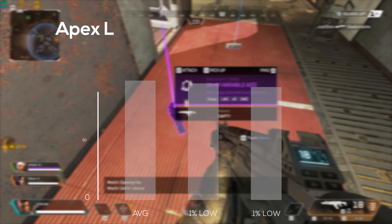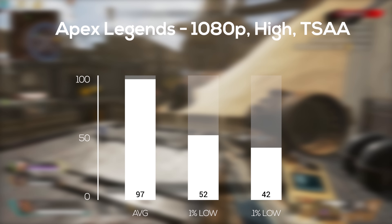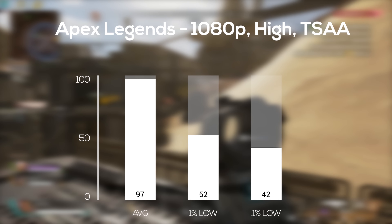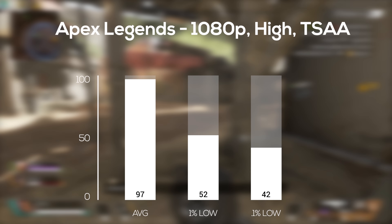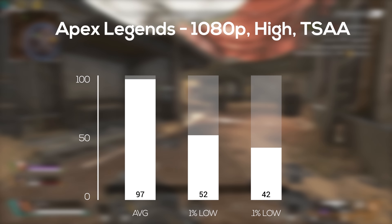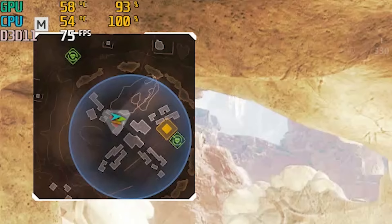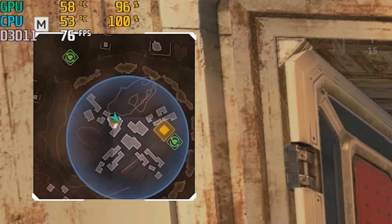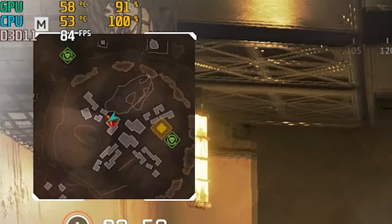The first game up was Apex Legends. In 1080p with high settings and TSAA turned on, I got a pretty solid average of 97 FPS. Keep your eye in the top left corner for MSI Afterburner for the rest of these benchmarks. As you can tell, Apex Legends had a pretty decent balance in terms of CPU and GPU load.